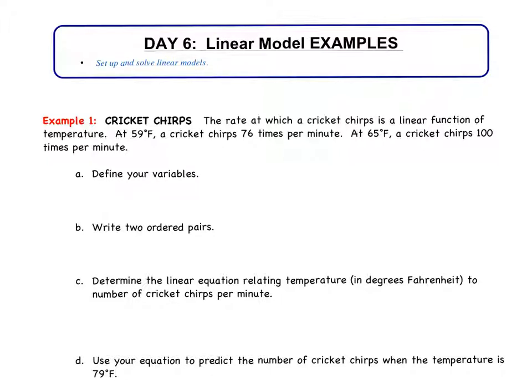First thing we have to do is define our variables. We're going to use X and Y. We have to figure out what is going to be X and what is going to be Y. In this case, we are given two pieces of information, temperature and cricket chirps per minute. Which of those makes sense as the X? Do we know how to determine which is X and which is Y? No.